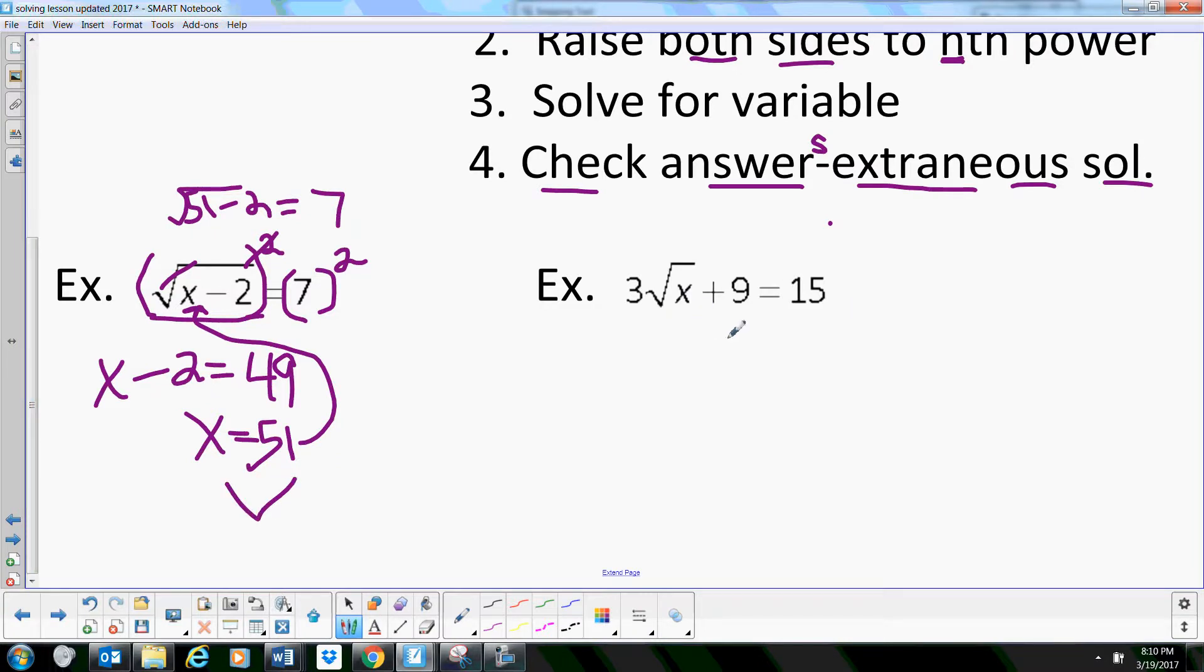Now let's look at the second one. We need to isolate the radical, so subtract 9 from both sides. That leaves us with 3 times the square root of x equals 6, so the square root of x equals 2. It took us several steps to isolate the radical, which is step 1.